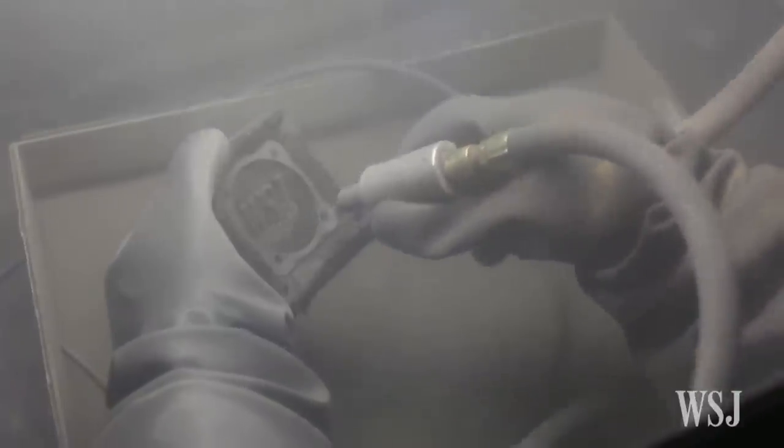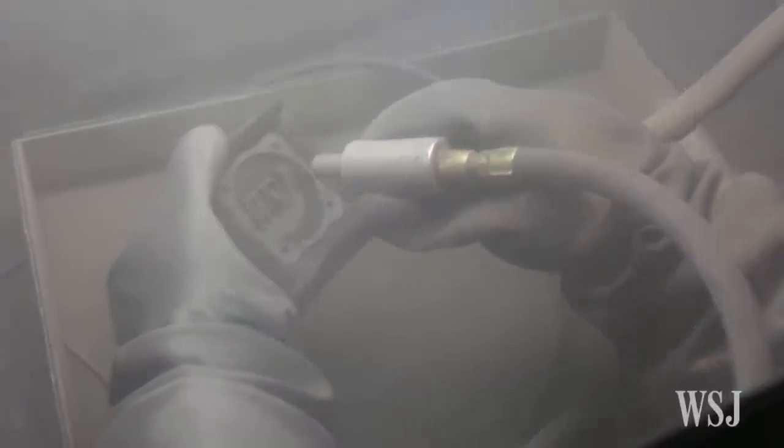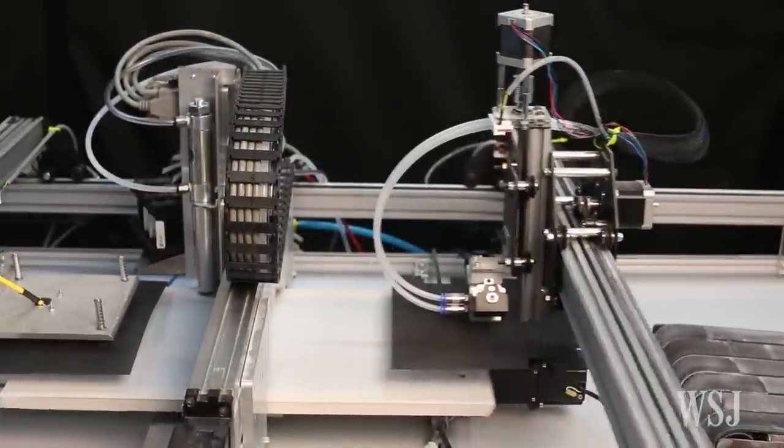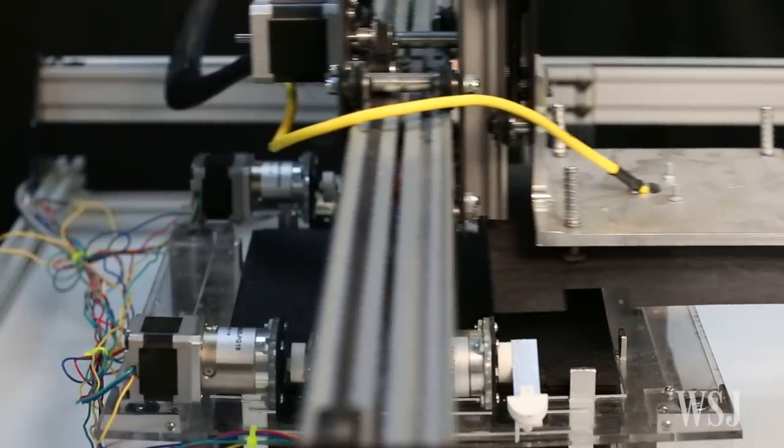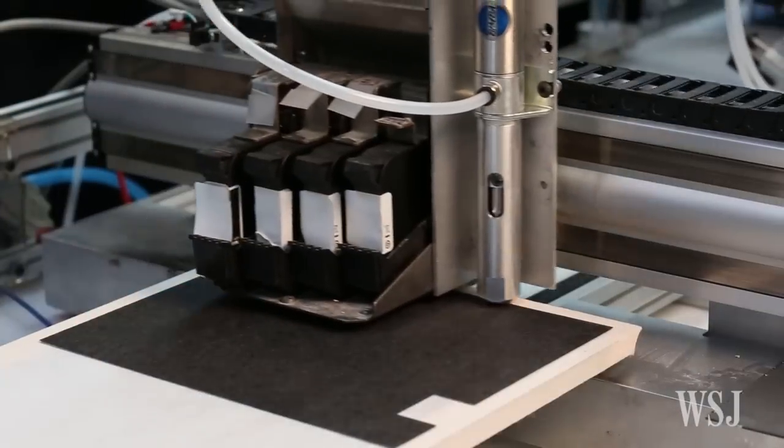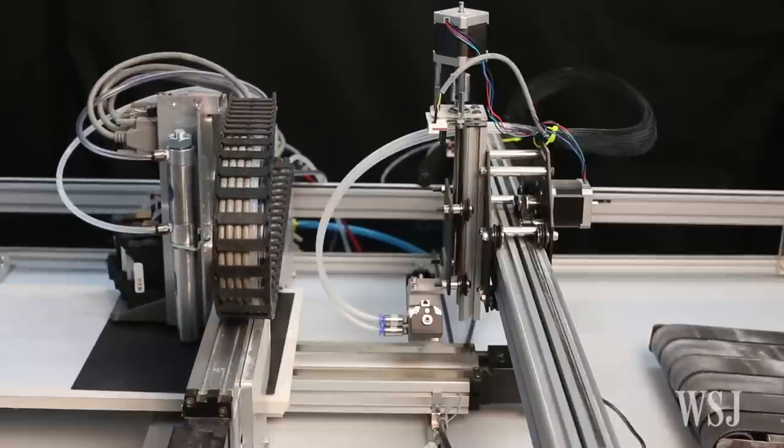The result is strong, lightweight parts that can take on forms that are simply impossible to build with traditional manufacturing techniques. In addition, Impossible Objects founder Robert Swartz says that eventually, he thinks the process can be scaled up until it can compete with traditional plastics manufacturing.